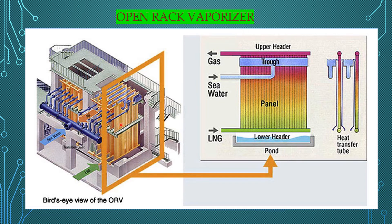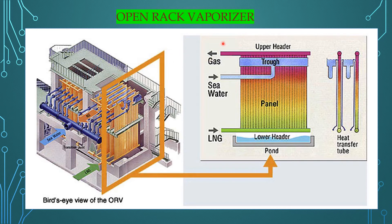Now we can see the schematic diagram of the open rack vaporizer — the top view and side view, whether in an FSRU or offshore plant. LNG is admitted at the bottom of the ORV through aluminum alloy tubes, flowing from bottom to top. Seawater is admitted from the top over the tubes, flowing top to bottom, and then sent back to sea. The flow is counter-current, and the converted natural gas is collected and sent to onshore facilities for further treatment.